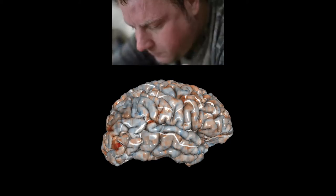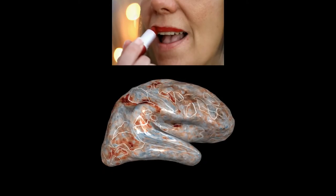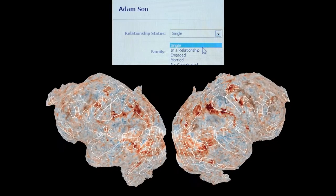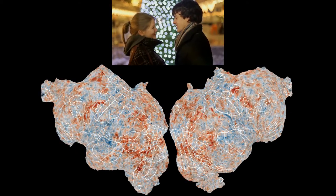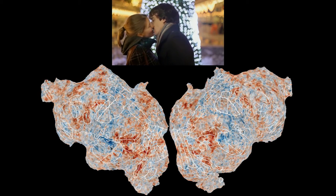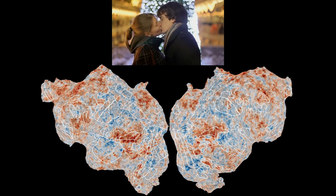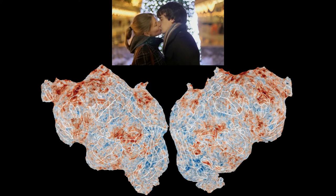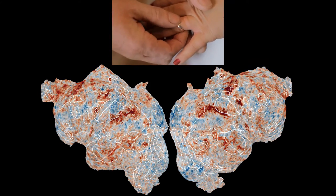An MRI measures brain activity in small volumetric units about the size of a pea called voxels. You can measure these metabolic units all over the brain and use this to map brain activity, as shown here. This is the brain of one human subject watching a movie. We inflate the brain and flatten it out so you can see the entire cortical surface, and we're painting brain activity on the cortical surface as this subject watches the movie. You can see that these patterns are dynamic and complicated and constantly shifting.